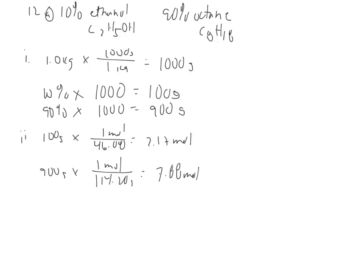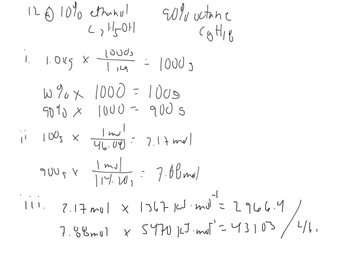So part three on the next page, I'm going to squeeze it in here, because I can, wants to know, what's the total energy released? Well, I've got 2.17 moles of ethanol. And I see, according to my equation, that 1367 kilojoules per mole is released. So I can just multiply these, and I can do the same thing with my octane, the 7.88 moles, times its energy release of 5470 kilojoules per mole. So I come up with the energy release by each fuel source, 2966.4 and 43,103 for a total of 46,700 kilojoules.